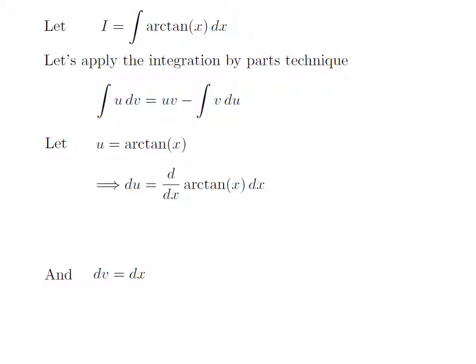We need to find the value of differential of u. As u is equal to arc tangent of x, differential of u is equal to the differentiation of arc tangent of x with respect to x, into differential of x. The derivative of arc tangent of x with respect to x is 1 divided by 1 plus x squared. To see how to find this derivative, please check the card in the upper right corner — the URL is also given in the description.